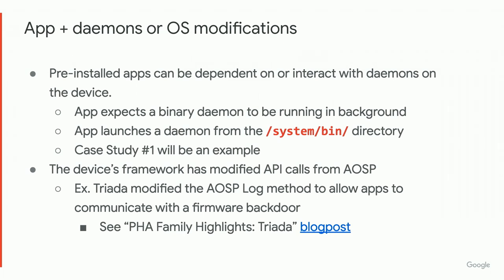Apps don't only collude with other apps. Sometimes they also expect and depend on behavior from binary daemons on the device, or even OS modifications. Apps can start daemons living in system/bin, or just know they're running on a timer in the background, and will interact with them. Regarding OS or framework modifications — the framework is the Android APIs — Triada is an example: they modified the Android log API to be overloaded and allow two arguments, so any app wanting to interact with the backdoor sent a second argument in log. That's the type of modification we're talking about.